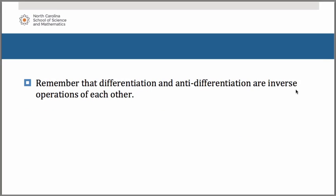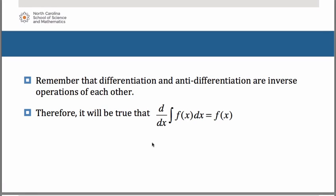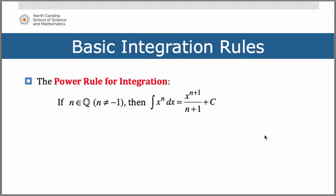Remember how we said that differentiation and anti-differentiation are inverse operations of each other. Therefore, it will be true that the derivative of the anti-derivative of f of x dx simply is f of x. The derivative and the anti-derivative essentially undo each other.